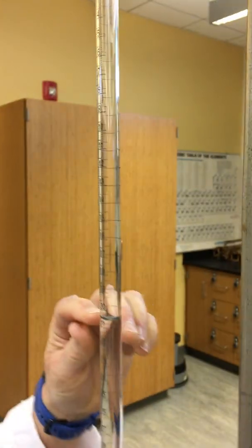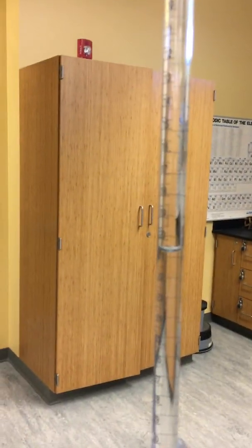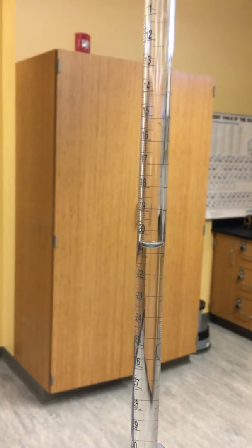So now what we want to do is record the volume that it took to do this. We bring it to eye level, and we have 20.60 milliliters. And that was our first titration to determine the concentration of sodium hydroxide.